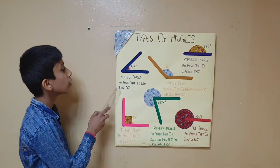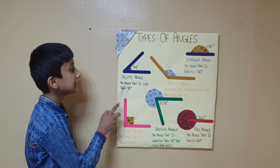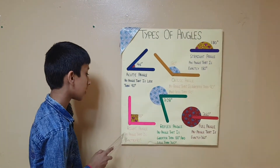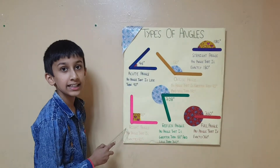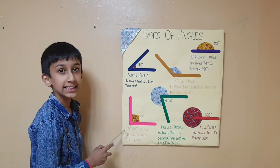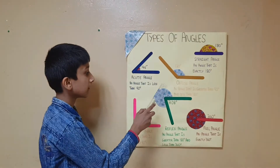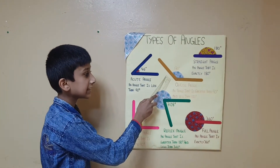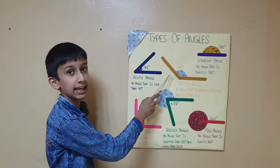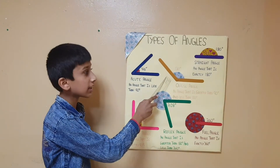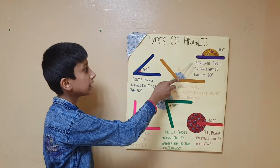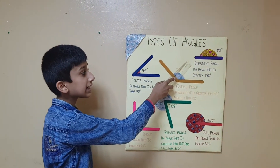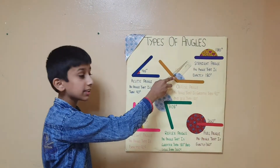Acute angle: an angle that is less than 90 degrees. Right angle: an angle that is exactly 90 degrees. Obtuse angle: an angle that is greater than 90 degrees and less than 180 degrees. Straight angle: an angle that is exactly 180 degrees.